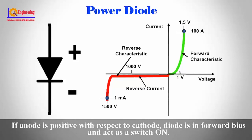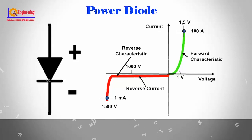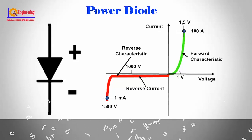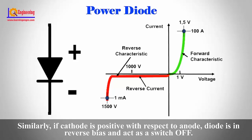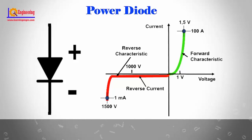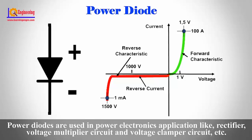If the anode is positive with respect to the cathode, the diode is in forward bias and acts as a switch on. If the cathode is positive with respect to the anode, the diode is in reverse bias and acts as a switch off. Power diodes are used in power electronics applications like amplifiers, voltage multiplier circuits, and voltage clamp circuits.